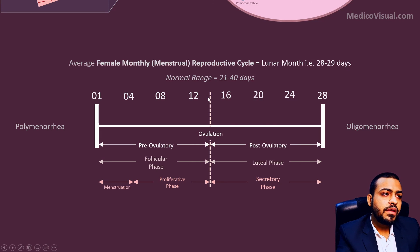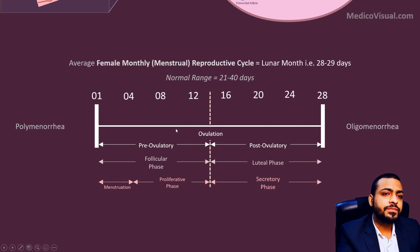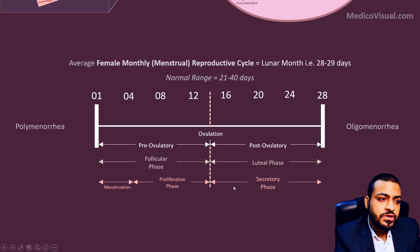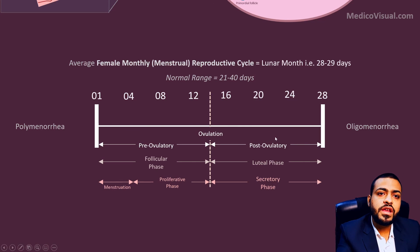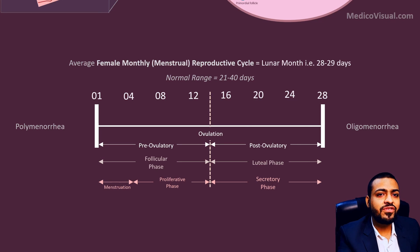The follicular phase or proliferative phase is usually the culprit in shorter or longer cycles, as it may be variable — follicles may take extra time to grow or may grow earlier. But the luteal phase is almost always about 14 days. She keeps waiting for the embryo to come for about 14 days, and if the embryo does not come within 14 days, she will shed the wall and start a new cycle. Thank you so much for watching this video.